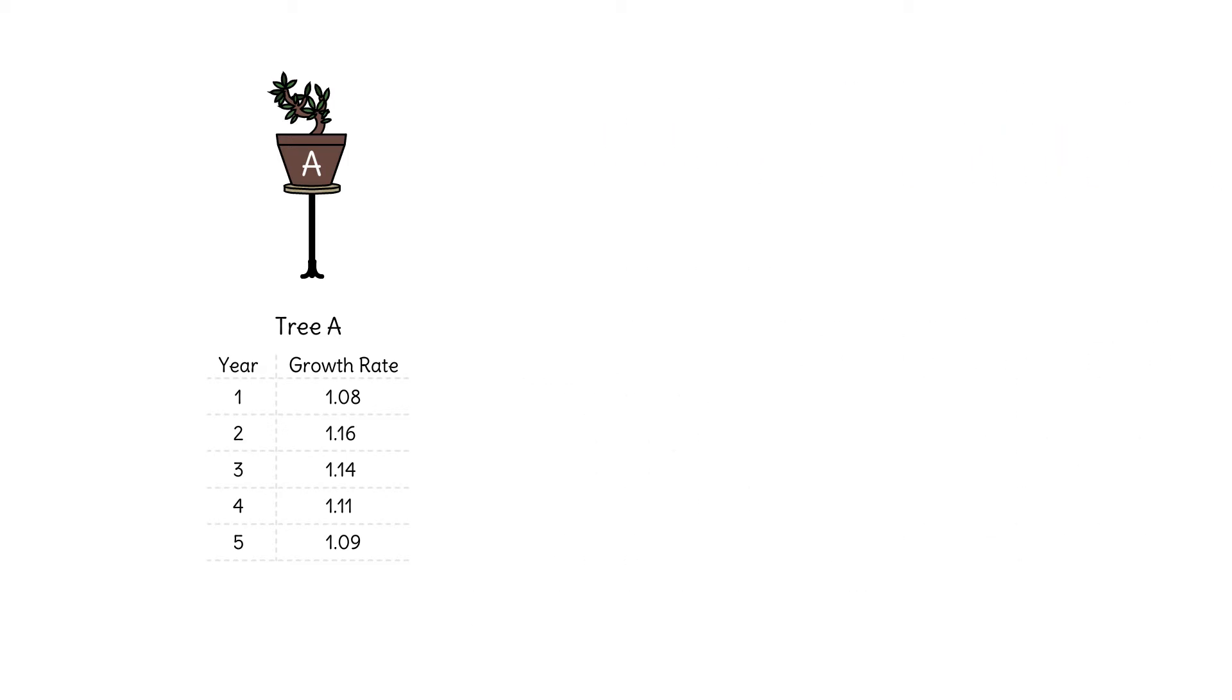For example, the first tree was 14 centimeters tall to begin with. We can calculate its height after five years by multiplying 14 times 1.08 times 1.16 and so on. This simplifies to 14 times 1.73. We want to find a steady growth rate that will give us the same result.